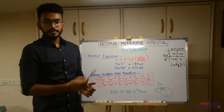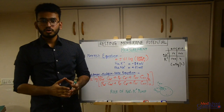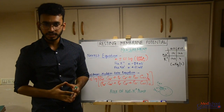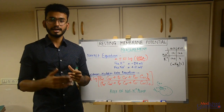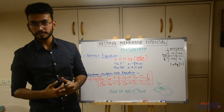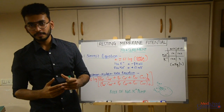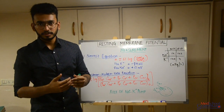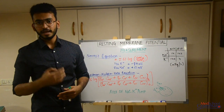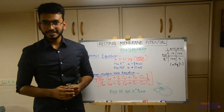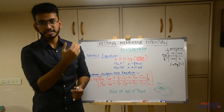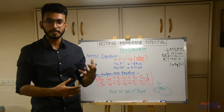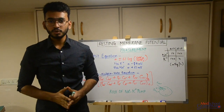To summarize: resting membrane potential is the state of polarization with a value of minus 65 to minus 90 mV. Its ionic basis involves selective permeability, Gibbs-Donnan equilibrium, and the Nernst potential concept. Measurement is done with the Nernst equation and Goldman-Hodgkin-Katz equation, and the sodium-potassium pump contributes by creating a net negative charge inside. This is an important topic as all forthcoming topics — including potentials in the heart and skeletal muscles — are based on it.